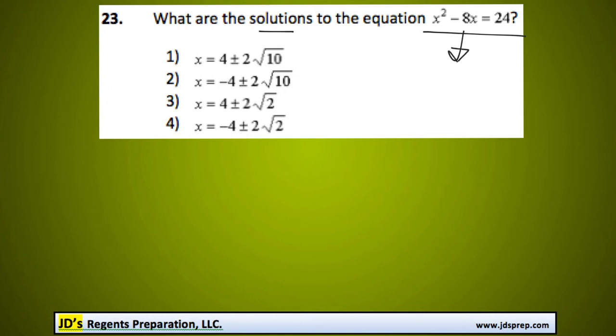First step we'll need to do to solve this equation is to move everything over to one side. So I'm going to subtract 24, and now the right side of the equation will equal 0.